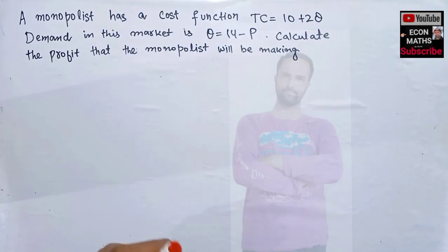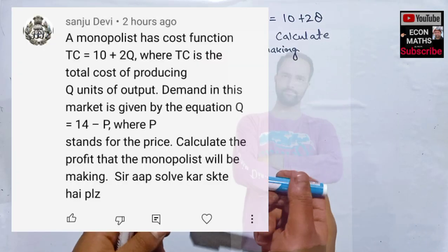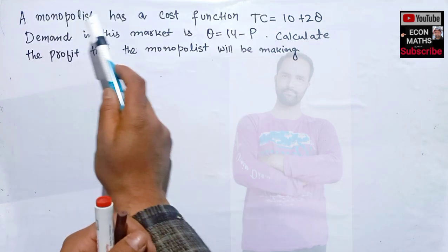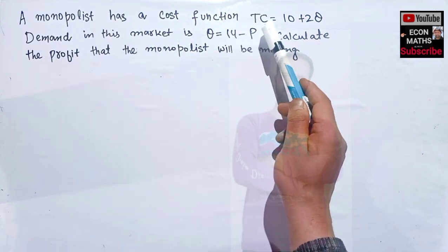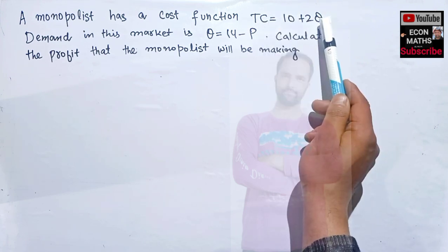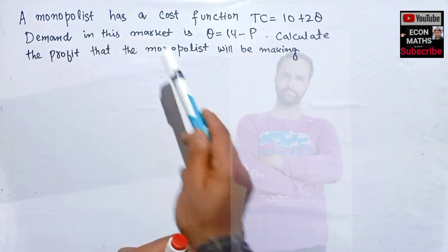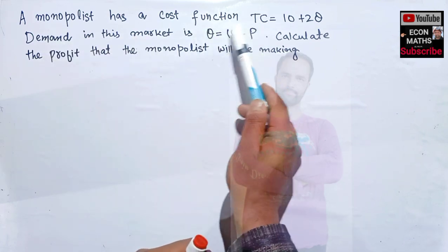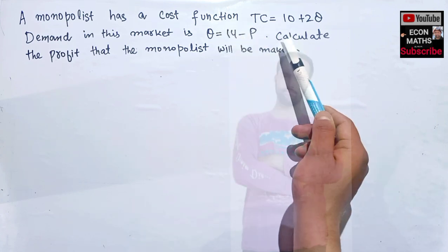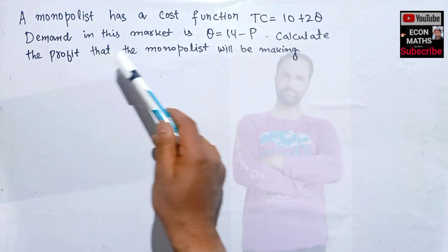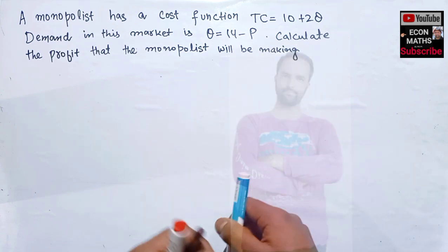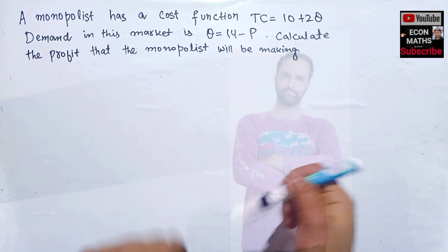Let us follow another question on profit maximization, asked by a viewer on the Econ Methods YouTube channel. The question is: a monopolist has a cost function TC = 10 + 2Q, where TC denotes total cost and Q denotes output. Demand in this market is given by Q = 14 - P, where P is price and Q is quantity demanded. We need to find the maximum profit this monopolist will be making.